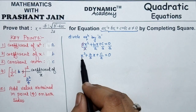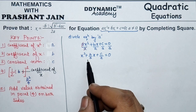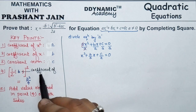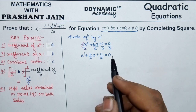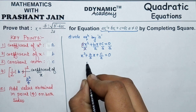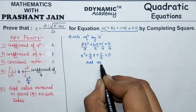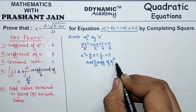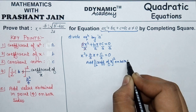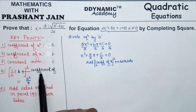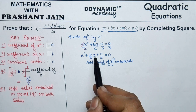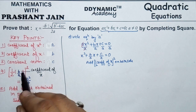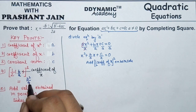Now in this equation the coefficient of x² is one, so we continue. In the next step, we need the coefficient of x. The method requires us to add the square of half the coefficient of x to both sides. The coefficient of x is b/a, so half of that is b/(2a), and its square is b²/(4a²).